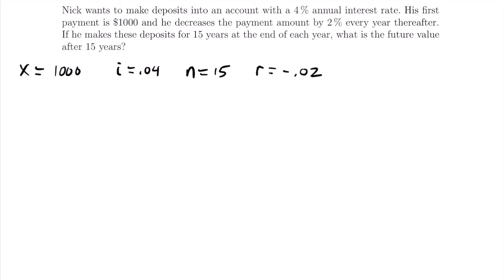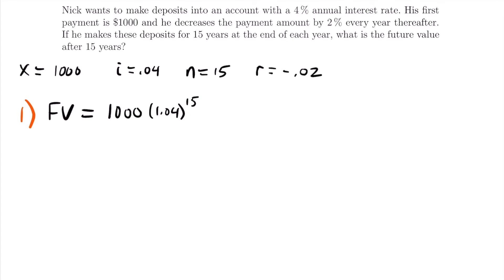The problem tells us we want the future value after 15 years. For step one, we evaluate our payments at year 15. The first payment of $1,000 is made at the end of year one, so it only generates interest for 14 more years until year 15. Be careful not to multiply by 1.04 to the 15th — since the payment is made at the end of year one, there are only 14 more years of accumulation. So we multiply by 1.04 to the 14th power.